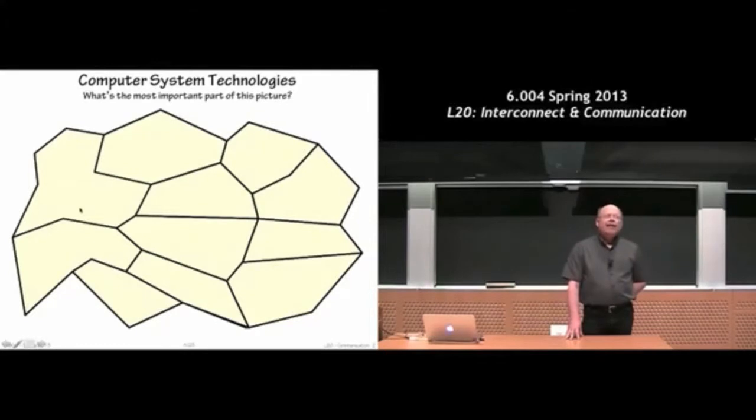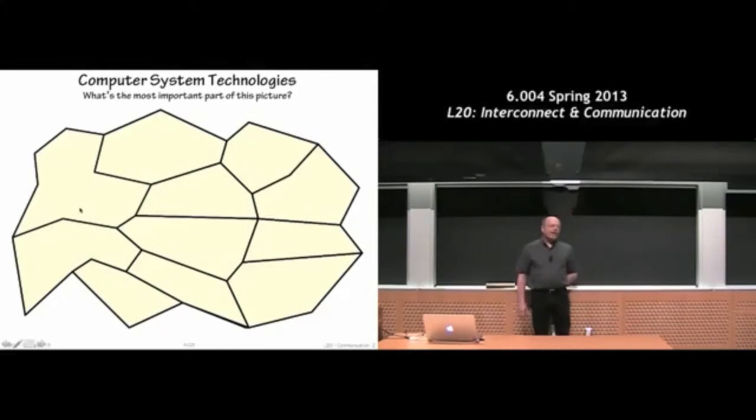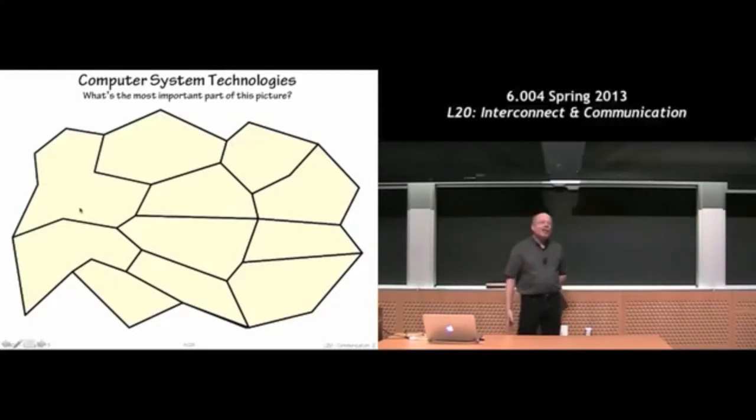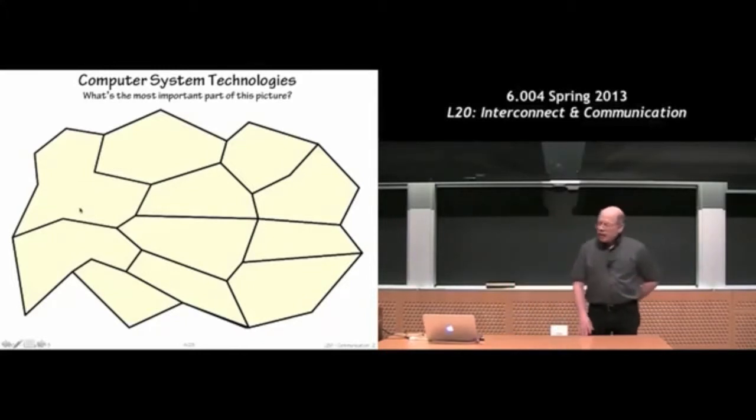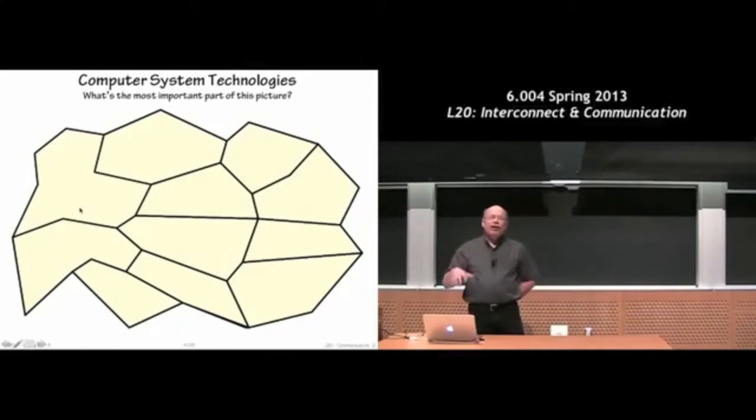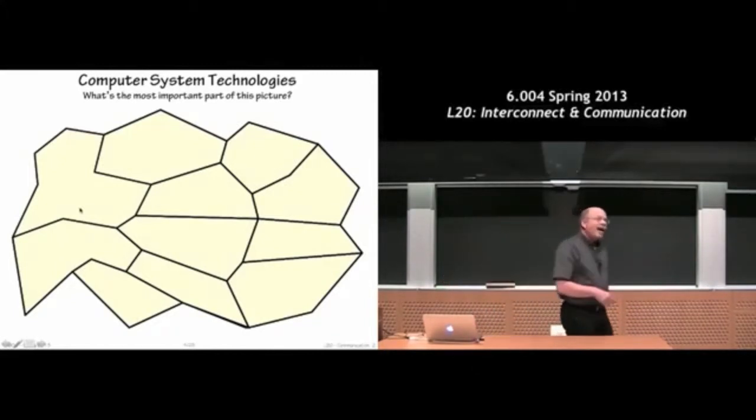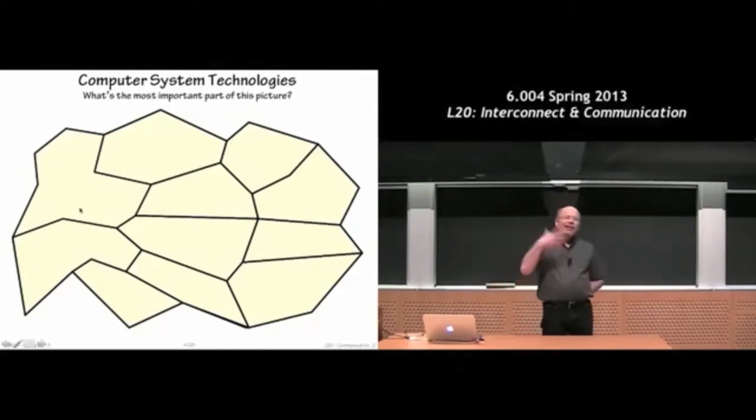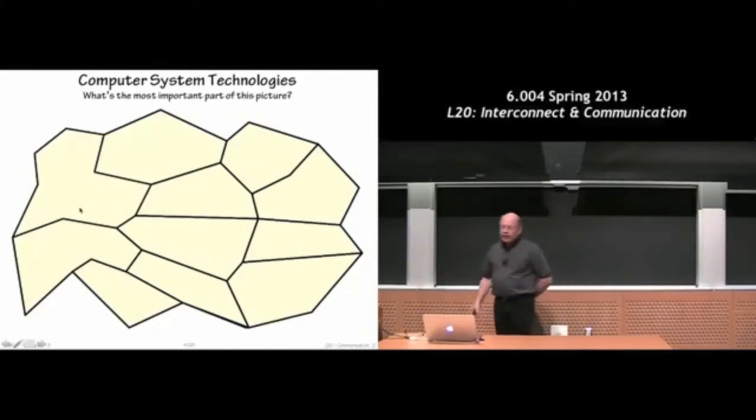Those are the things that actually survive the generations of technology changes. The networking software that you're running is not very different from the networking software that ran on the machines of 20 years ago. The notion of doing IP and TCP and connecting to computers around the world, even though there's many orders of magnitude more computers to connect to - enough so that we were running out of the 32-bit address space originally allocated for network addresses. The basic software is unchanged, even though we've gone from 1 gigabit chaos net to 10 gigabit ethernet to 100 gigabit ethernet to 1,000 - we keep changing all the different technologies, and yet a lot of the systems remain unchanged.